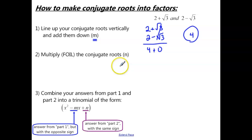Then, step 2, multiply or FOIL the conjugate roots. So let's take 2 plus the square root of 3, and then we're going to multiply that with 2 minus the square root of 3. So we need to FOIL this. So the first terms, 2 times 2 is 4.